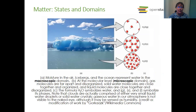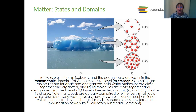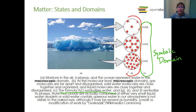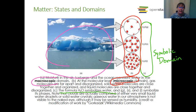Here's another example: A is our macroscopic domain with the water and icebergs. B shows our liquid water, solid water, and gaseous water — the microscopic domain. And C, the symbolic domain, shows the formula H₂O symbolizing water. So here we have C as our symbolic domain, B as our microscopic domain, and A — what we can see — as our macroscopic domain.